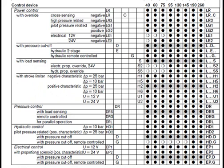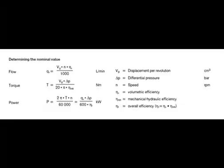The through-drive is suitable for adding gear pumps and axial piston pumps up to the same size, i.e. 100% through-drive. The output flow is proportional to the drive speed and infinitely variable between maximum and zero.